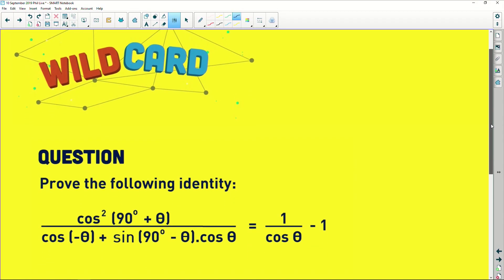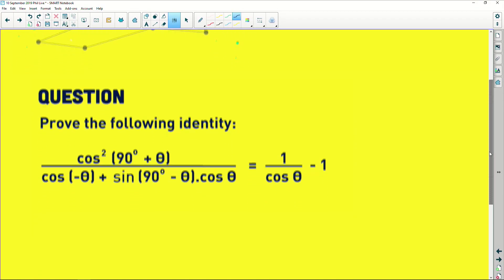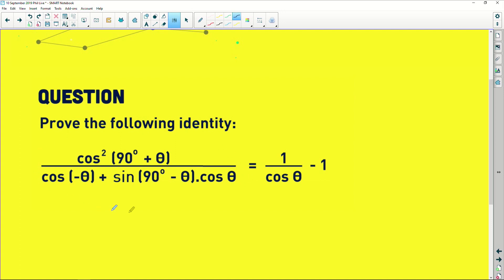Prove the following identity. We've got this whole mesh of ideas on the left-hand side and we've got a fairly simple expression on the right-hand side.